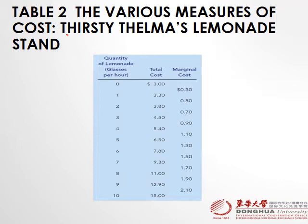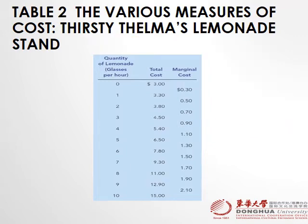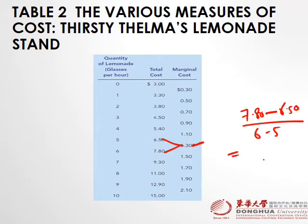We have Table 2, which shows various measures of cost for Thirsty Thalmo's lemonade stand. We have quantity and total cost, and our target is to find marginal cost. Using the formula — change in total cost divided by change in quantity — 0.30 came from (3.30 minus 3.00) divided by (1 minus 0) = 0.30. And 1.30 came from (7.80 minus 6.50) divided by (6 minus 5) = 1.30.